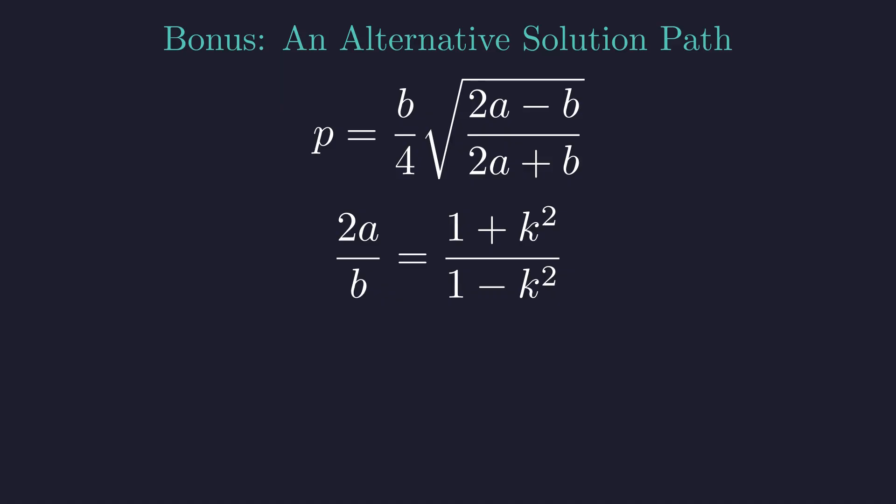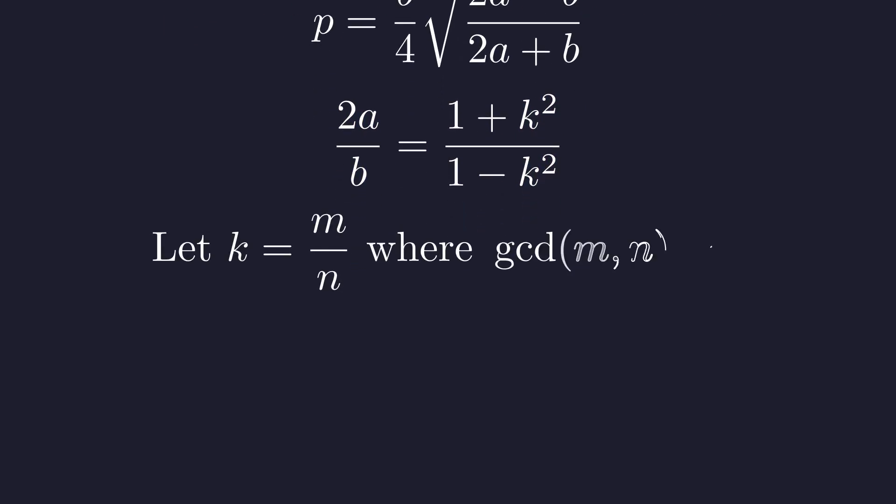Now, here's the crucial step. Since a and b are integers, we need this rational function to produce integer values. Let k equal m over n in lowest terms, where m and n are co-prime integers. Substitute our rational form.